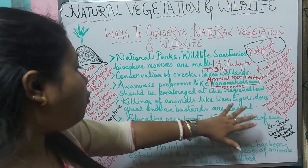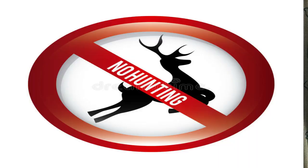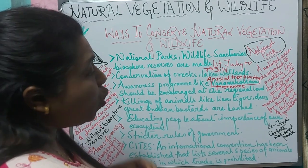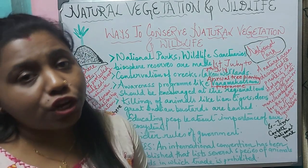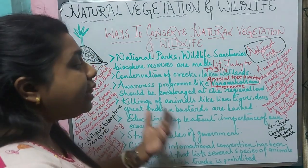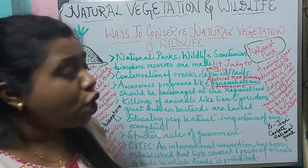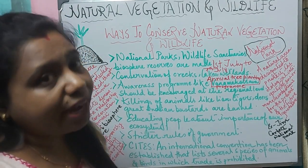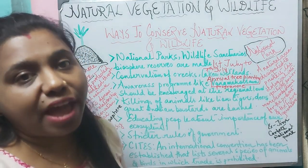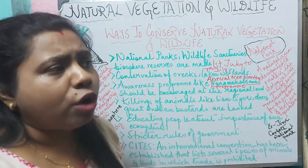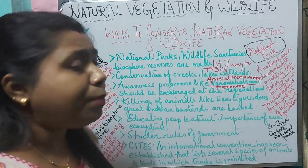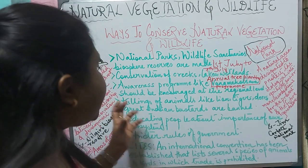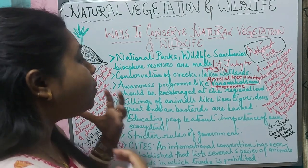The next way is by banning the killing and hunting of animals like lions, tigers, deer, and the Great Indian Bustard. These are animals that are already on the verge of extinction or are endangered species. It is very important to restrict the killing and hunting of animals and the illegal trade of animals for their skin, bones, or teeth so that they can be protected.